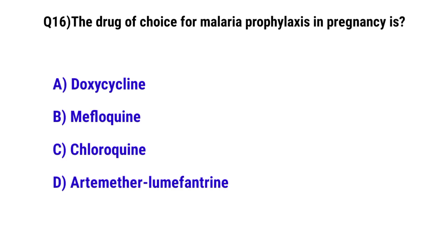Question No. 16: The drug of choice for malaria prophylaxis in pregnancy is — the correct option is C: chloroquine.